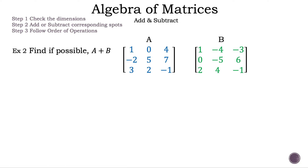Now let's move on to example 2. Find, if possible, A plus B, where A is a 3 by 3 matrix with 1, 0, 4 in the first row; negative 2, 5, 7 in the second row; and 3, 2, negative 1 in the third row. And B is also a 3 by 3 matrix with 1, negative 4, negative 3 in the first row; 0, negative 5, 6 in the second row; and 2, 4, negative 1 in the third row.